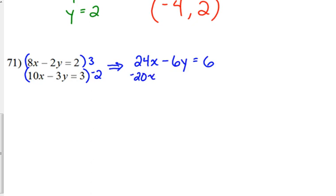Multiply the second one by negative 2. So, we've got negative 20x plus 6y is equal to negative 6. So, when we add, alright, 24 plus negative 20, it's like subtracting 20. So, that's 4x negative 6y plus 6y is 0.